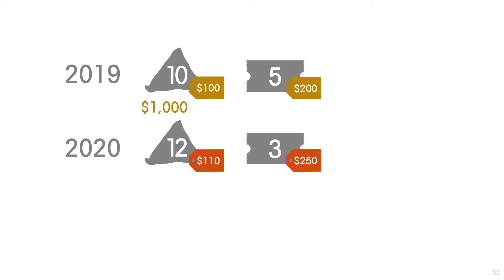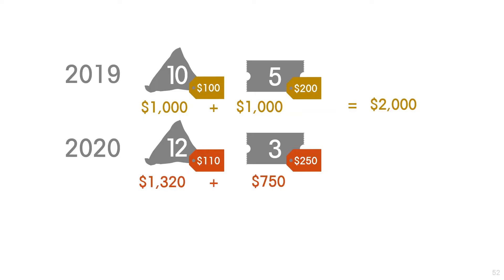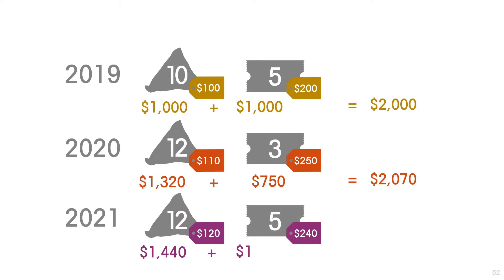There was $1,000 worth of the good — 10 times 100 — and $1,000 worth of the service — 5 multiplied by 200. So the value of GDP in 2019 was $2,000. We can repeat that exercise for 2020 and get that the value of production was $2,070. And let's add a third year, just so we have more data to work with.